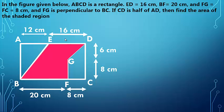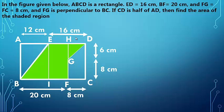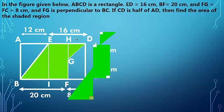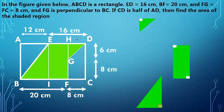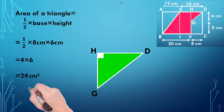In this question, we need to first draw perpendicular lines to divide the shaded part into three shapes, so that if we find each shape's area and add them, we get the area of the shaded part. After drawing the perpendicular lines, we get two triangles and one rectangle. First, we find the area of triangle GHD. Using the formula: half × base × height — the base is 8 centimeters, height is 6 centimeters — giving us 24 centimeter square.